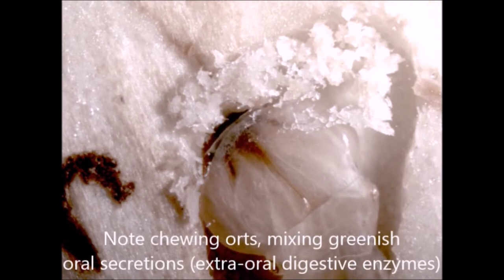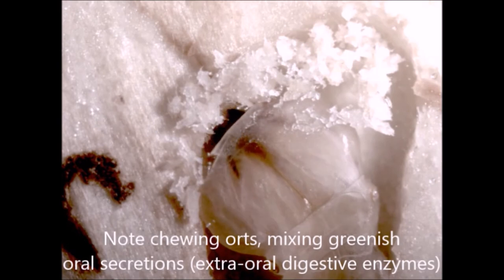Again, here is the active biting and chewing. You can also see, if you regard the mouth parts carefully, the activities of labial palps and maxillary palps, which are sensory structures helping the insect to make decisions about whether or not the food material is appropriate to be ingested.